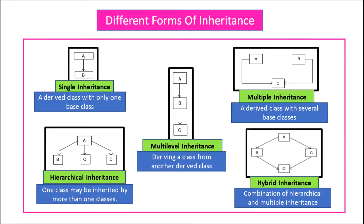Different forms of inheritance: there are five different forms. The first is single inheritance, where a derived class is derived from only one base class. You can see in the figure that A is the base class and B is the derived class.